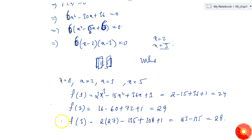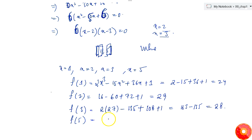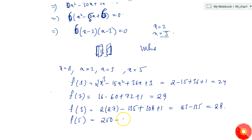Now f(5) = 2(5³) - 15(5²) + 36(5) + 1 = 2(125) - 15(25) + 180 + 1 = 250 - 375 + 180 + 1 = 56.